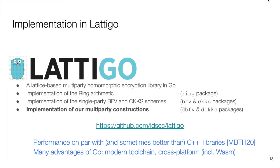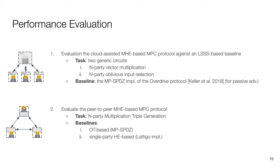To support the prototyping and evaluation of such solutions, we have implemented our constructions in Latigo, a Go library for ring-learning with errors-based homomorphic encryption. Latigo implements the BFV and CKKS schemes and has a pure Go, fully optimized ring arithmetic layer. Hence, its performances are on par, and sometimes better than C++ homomorphic encryption libraries. We proceeded to evaluate the performances of the MHE-based MPC solution using our implementation.